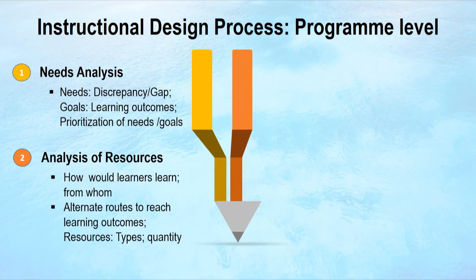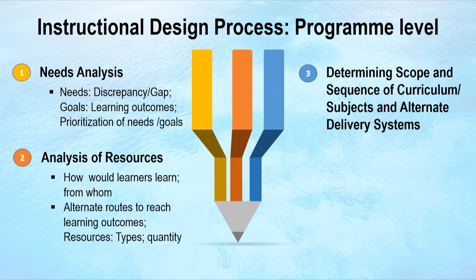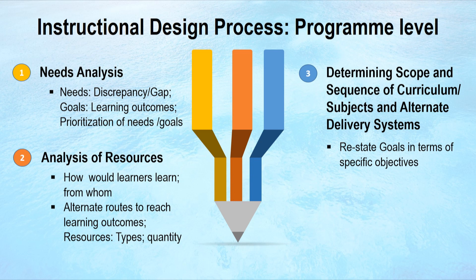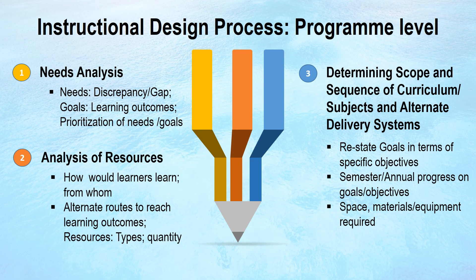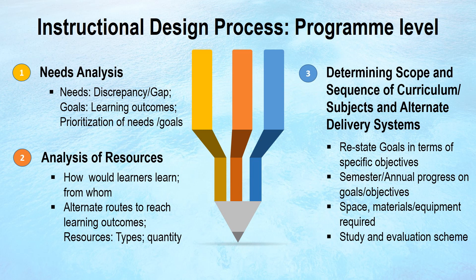The third activity is determining the scope and sequence of curriculum subjects and alternative delivery systems. You can select a subject, break it down into topics, and break those topics into sub-topics. Goals should be restated as specific objectives. You also need to consider whether the course is offered annually or through a semester system, what space, materials, and equipment are required, and how to decide on the study and evaluation scheme.